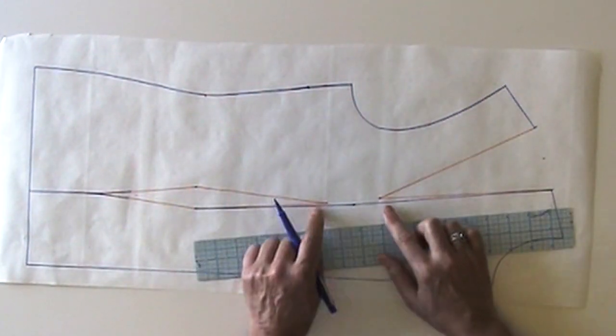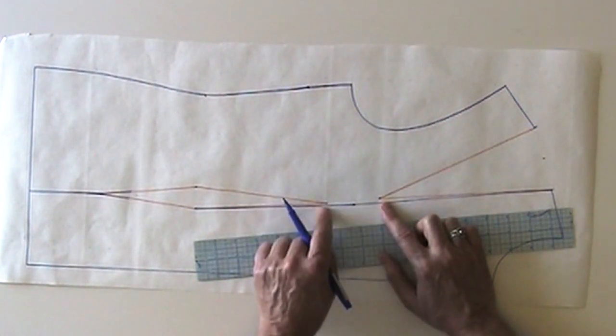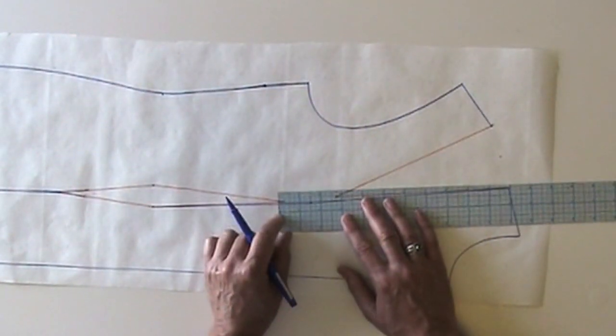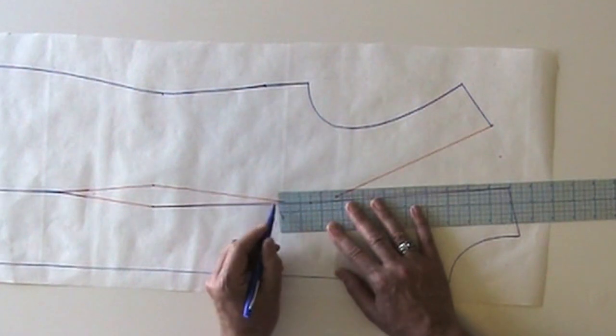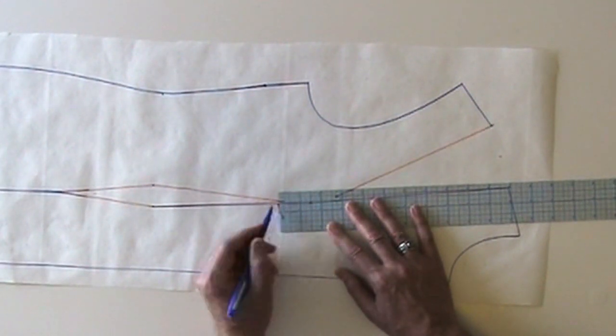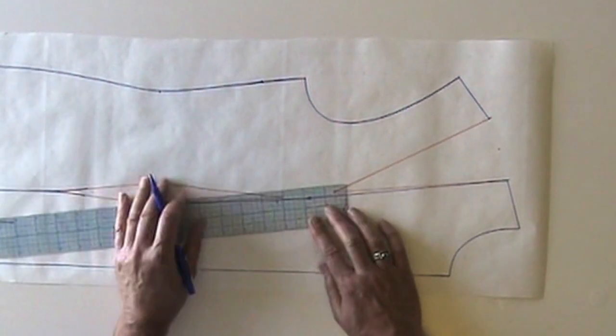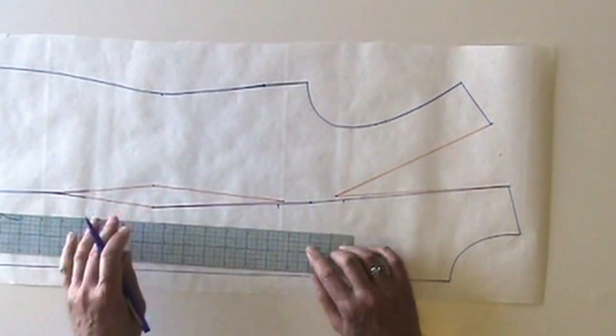I'm going to go ahead and put a couple of notches here. I'll put a notch one and a half inches on either side of the apex. That's an arbitrary amount. It can be a little more, a little less.